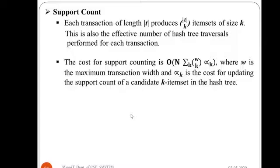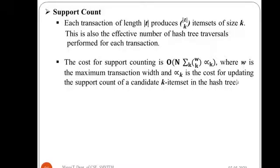The last factor is support counting. Once the candidates are ready, we determine their support count, based on which pruning is done. Each transaction of length t produces t-choose-k item sets of size k. The cost for support counting will be O(N × Σ_k w·C_k·α_k), where w is the maximum transaction width and α_k is the cost of updating the support count. Support counting therefore has a definite effect on the computational complexity.